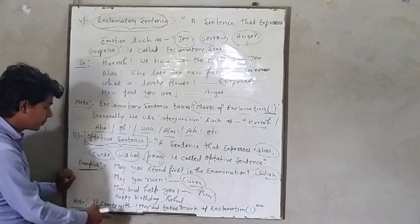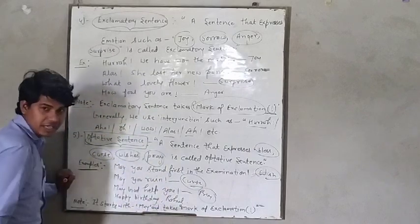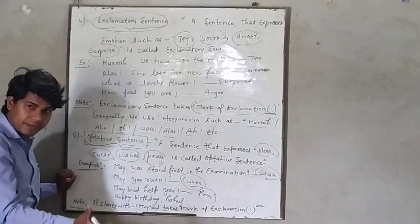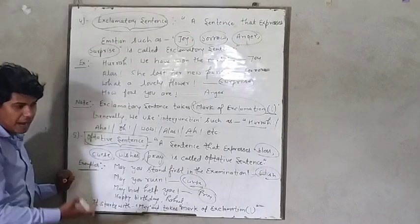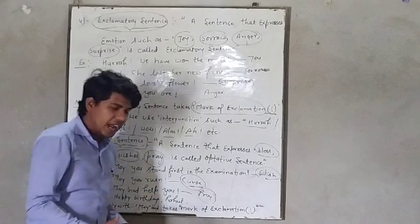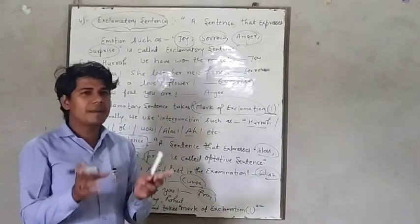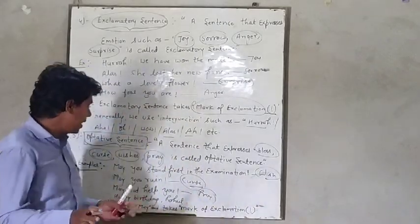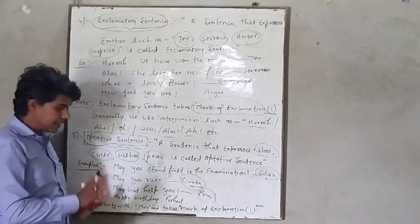And the last one, happy birthday round. Usually, generally, we wish our friends happy birthday, happy teacher's day, happy Eid, happy Diwali. These are all types of wishing. Comes in the category of optative sentences.